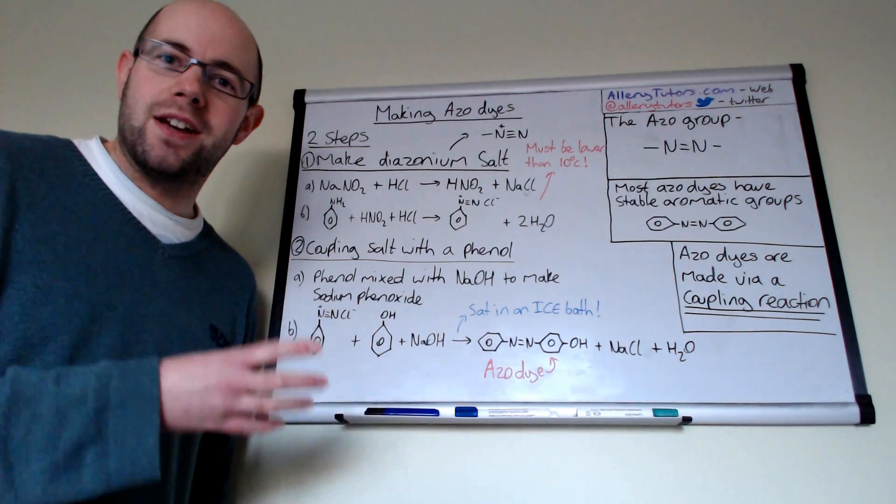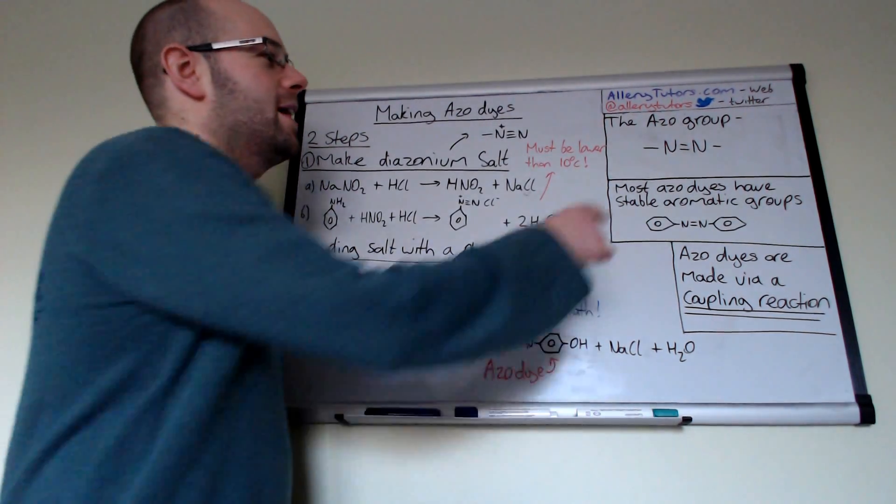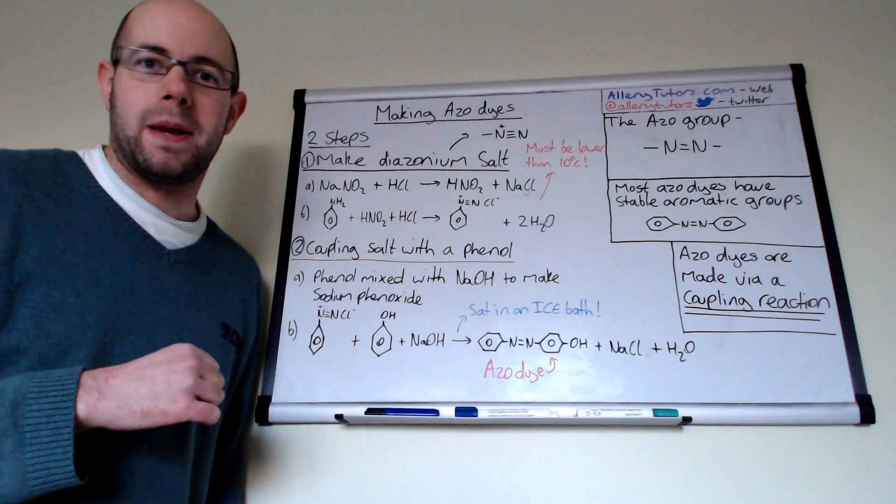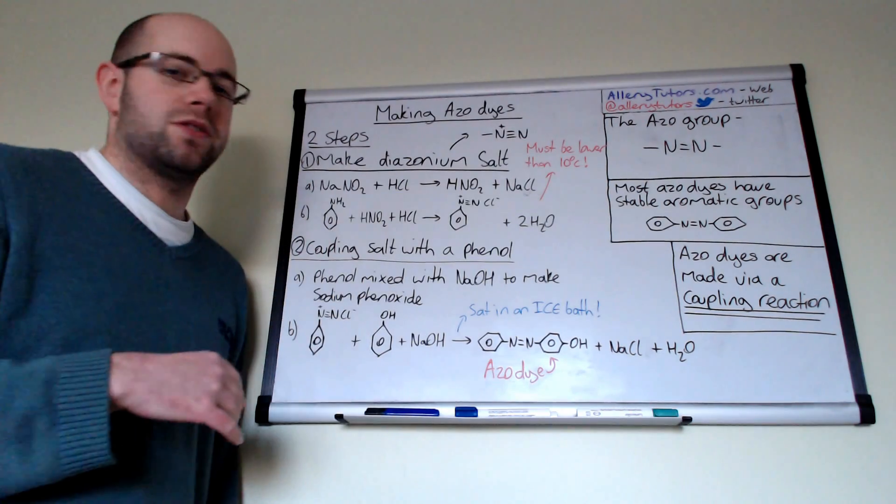What we have is an azo group, and the azo group is two nitrogen with a double bond between them. You'll see where the azo group appears in these reactions that I'm going to show you.